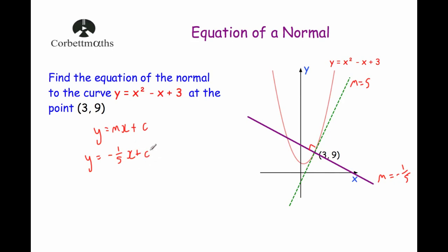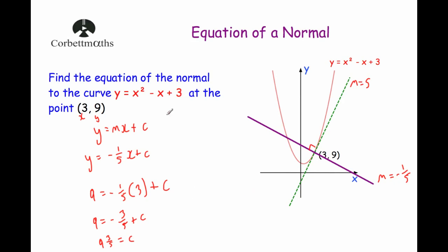Now we need to find c. We're going to substitute in the point on the line — the (3, 9) — into that equation. So x equals 3 and y equals 9: 9 equals minus 1 fifth times 3 plus c. Minus 1 fifth times 3 equals minus 3 fifths, so 9 equals minus 3 fifths plus c. Adding 3 fifths to both sides gives c equals 9 and 3 fifths. So the equation of the normal is y equals minus 1 fifth x plus 9 and 3 fifths. You could also write that as y equals minus 0.2x plus 9.6.